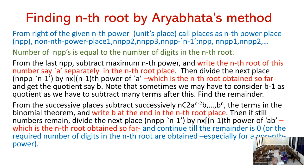We consider the nth power place and the various places related to it. Each place is an nth power place; the various n minus 1 places are non-nth power places (NNPP). NNPP values are 1, 2, 3 up to n minus 1. The number of nth power places equals the number of digits in the nth root. From the last NNPP, subtract the maximum nth power and write the nth root of this number, say a, separately in the nth root place.